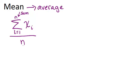If you have all the data for the whole population, then the mean is noted by this symbol, which is pronounced as mu.